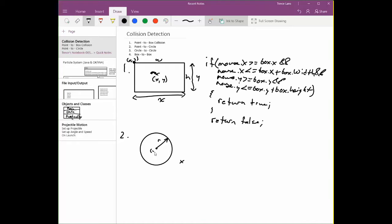A circle is defined by a center point and a radius. So it has an x and a y and it has a radius. And our point over here is defined by an x and a y.